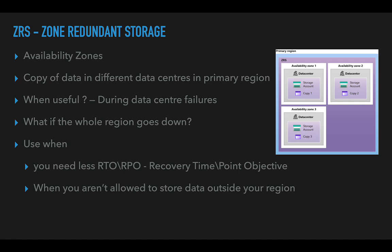ZRS is useful during one data center failure when other data centers are up and running. However, if the whole region goes down — for example South India has a critical network or power issue — all availability zones are affected. The key metric here is RTO and RPO: recovery time and recovery point objectives.